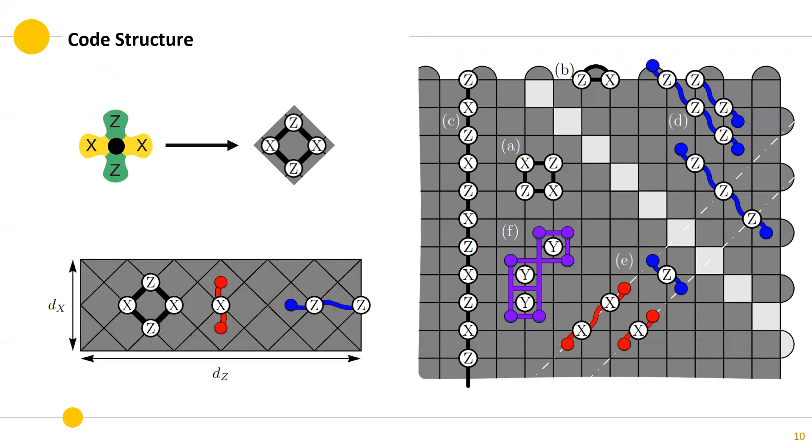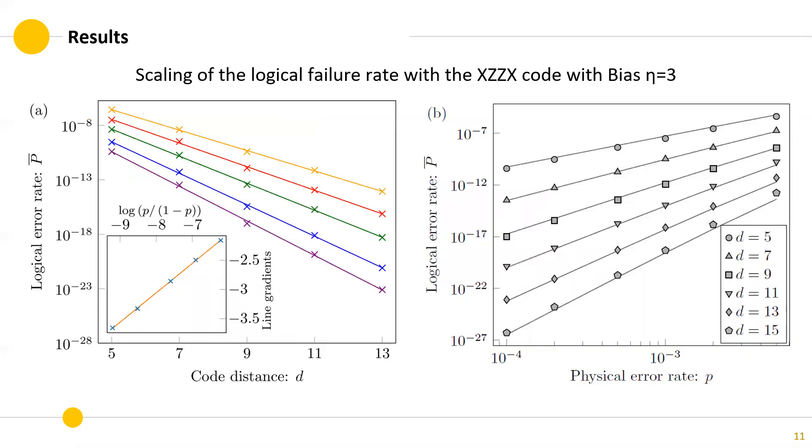We can reshape the surface code to fit a specific number of qubits or target bias noise. Here, we see how the logical error rate scales when using the XZX surface code with bias factor of 3.